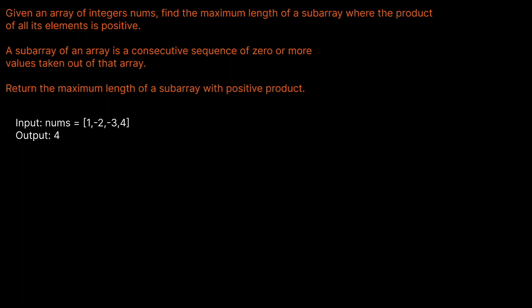Hello and welcome back to the Cracking Things YouTube channel. Today we're going to be solving LeetCode problem 1567: Maximum Length of Subarray with Positive Product. Given an array of integers nums, find the maximum length of a subarray where the product of all its elements is positive. A subarray is a consecutive sequence of zero or more values taken out of that array. Return the maximum length of a subarray with positive product.